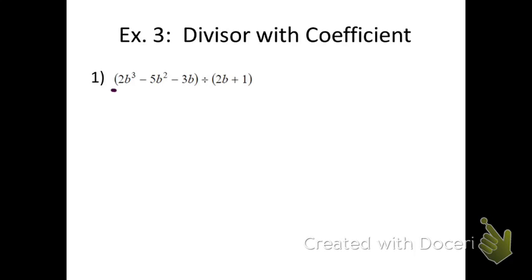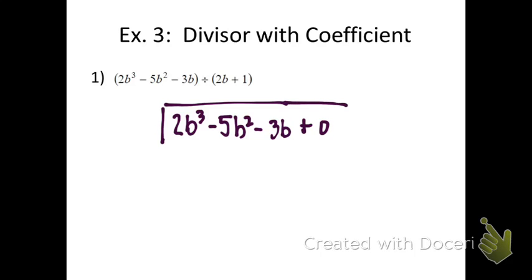The same rules apply. We look at the first polynomial. What's the degree it's in? It's in the third degree. That's the largest exponent. It has to be in descending order. It looks like it already is, and there's no constant. First thing you do is set up your division problem: 2b cubed minus 5b squared minus 3b. And I'll add a place marker for the 0 just in case I need to have it there.